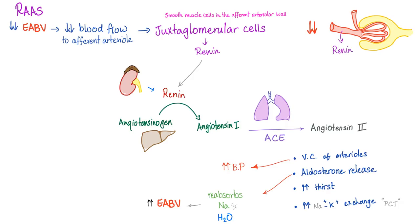Now let's talk about the renin-angiotensin-aldosterone system. When your effective arterial blood volume is low, blood flow to the afferent arteriole is low. The juxtaglomerular cells — specialized smooth muscle cells in the afferent arteriole wall — sense this change and secrete renin. Renin converts angiotensinogen into angiotensin-1, which is converted into angiotensin-2 using ACE. Angiotensin-2 leads to vasoconstriction of arterioles, raising blood pressure, and aldosterone release, which reabsorbs salt and water — increasing effective arterial blood volume and curing the problem.